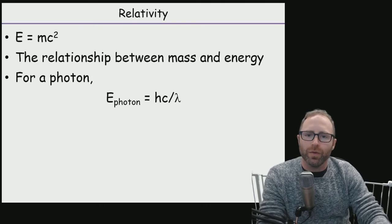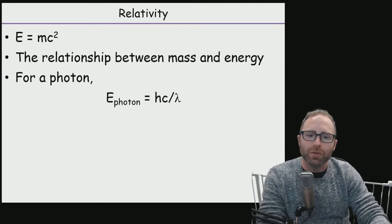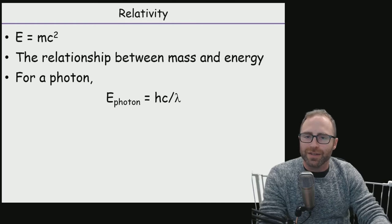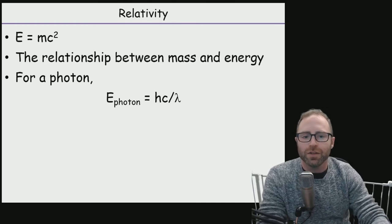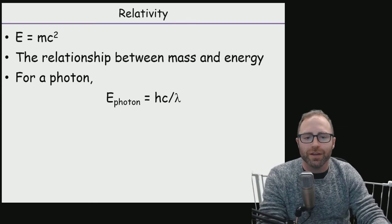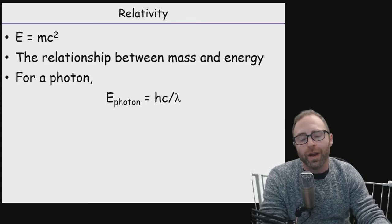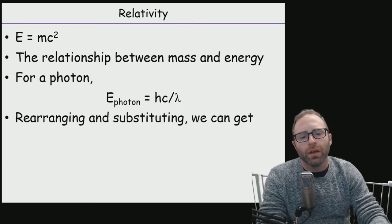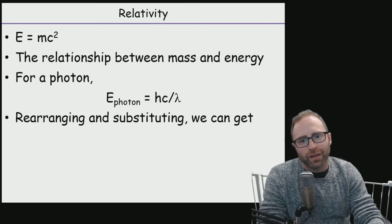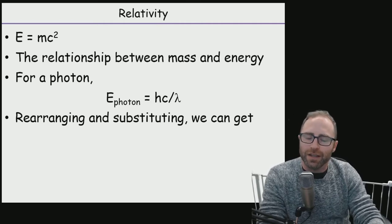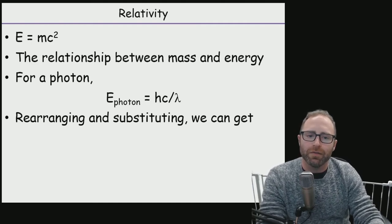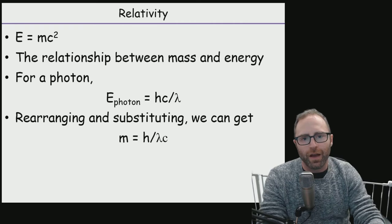For a photon, we can say that the energy of a photon is equal to hν. Well, if we replace the ν, and we rearrange the speed of light equation, we could say, with a little bit of substitution, the energy of our photon is going to be equal to, yes, hν, or h Planck's constant times the speed of light divided by wavelength. So we can take the energy equation, the special theory of relativity, E equals mc squared, and we can substitute that in with our energy of a photon equation.